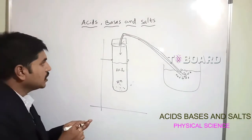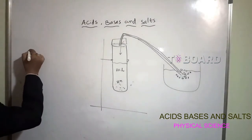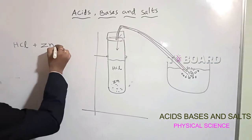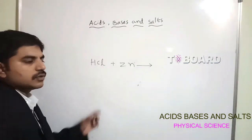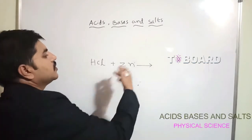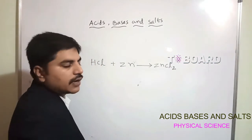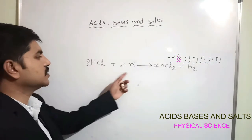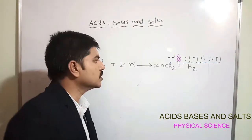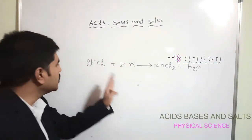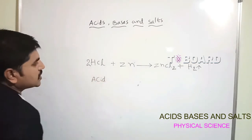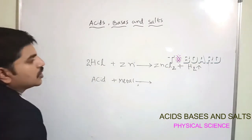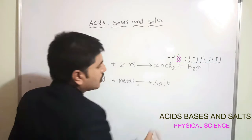The chemical reaction is: Zn + 2HCl → ZnCl₂ + H₂. Zinc is a metal and HCl is an acid. The product ZnCl₂ is a salt and hydrogen gas is released. So acids reacting with metals give us salt and hydrogen gas.